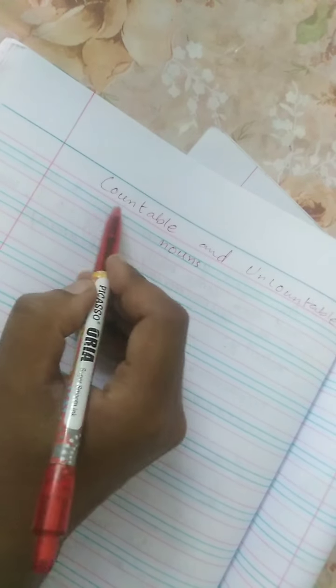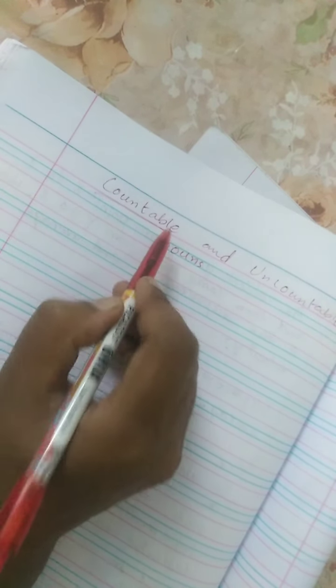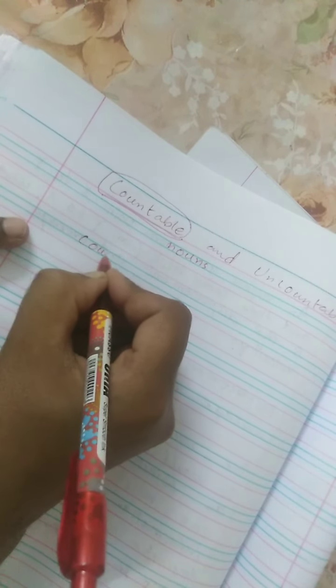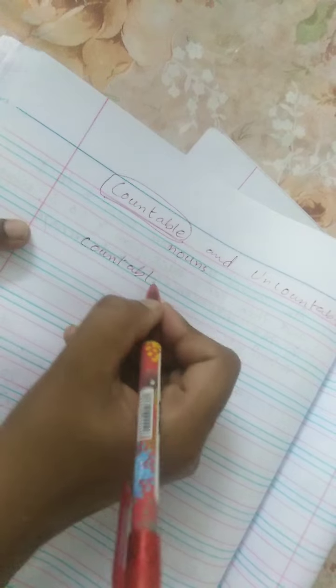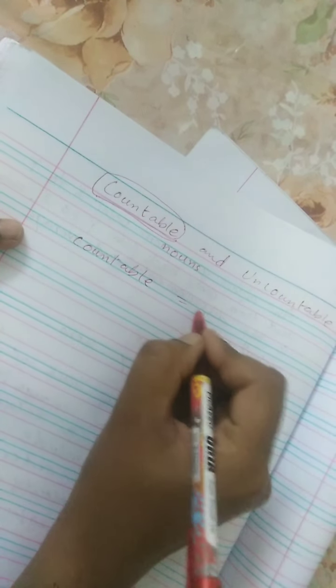In our previous video we discussed proper and common nouns. Now it's time to learn about countable and uncountable nouns. As you know from that word, it is very clear that countable nouns are those nouns which we can count.